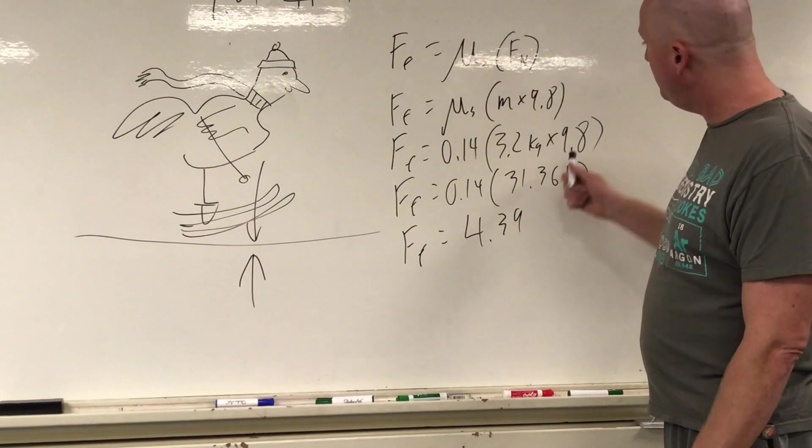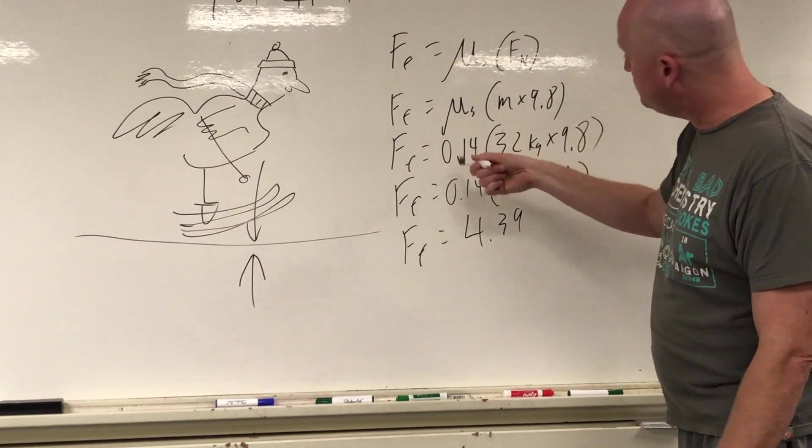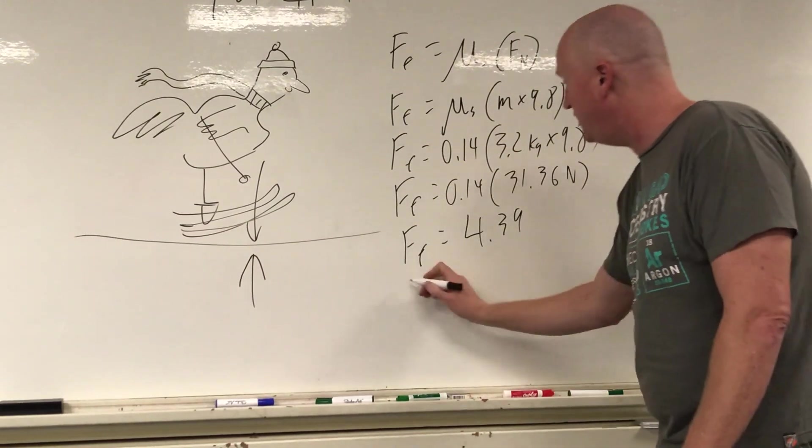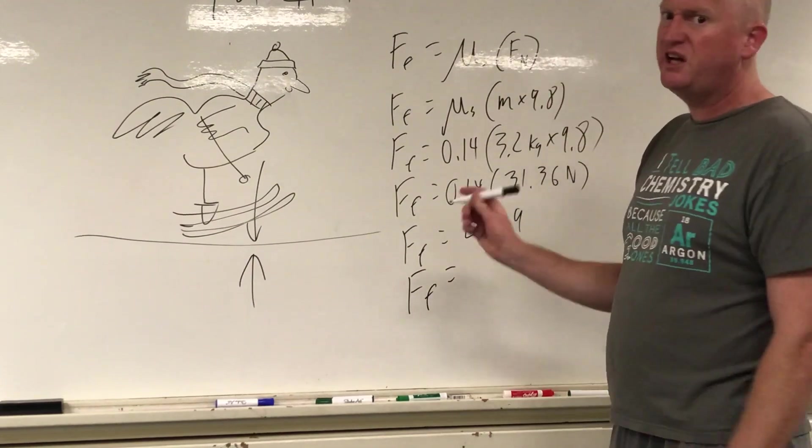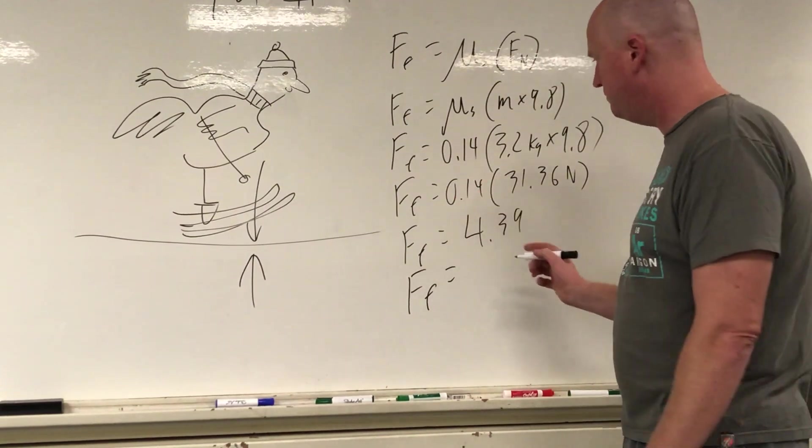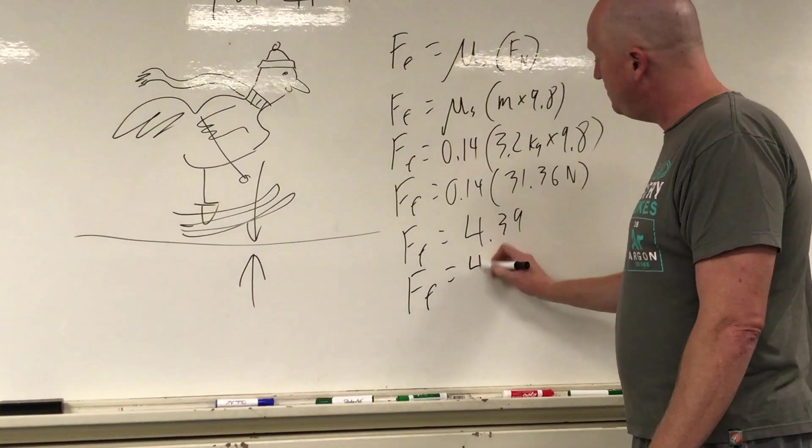Now by the way, two sig figs, two sig figs, two sig figs - this has got to be two sig figs. So the force of friction required to get a chicken on skis to move is going to be 4.4 newtons.